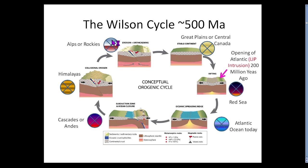Wilson cycles can be on the order of about 500 million years — it seems like it's taken 200 million years for the Atlantic Ocean to get to its present position, so given it might spread for another 50 million years, it'll probably take that same amount to come back together. Wilson cycles aren't always gigantic though; the Red Sea near Saudi Arabia is a brand new ocean forming that might only be a 20 to 30 million year opening and closing cycle.